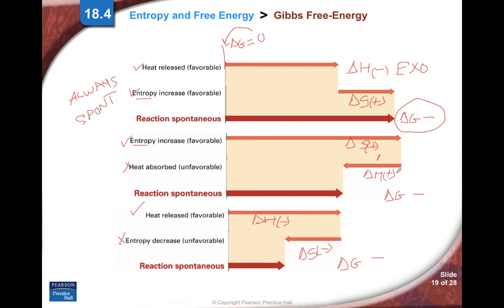When delta H is negative it's exothermic. When delta H is positive it's endothermic. Delta S is the disorder and it could either be positive or negative. We talked about how we can determine if it's positive or negative just a few minutes ago.